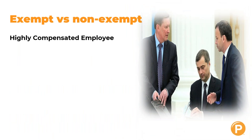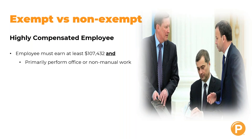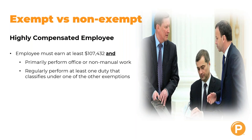The highly compensated employee classification requires earning at least $107,432 a year, performing primarily office or non-manual work, and regularly performing at least one duty that qualifies under another exemption category — such as executive or administrative. This category is often used when a highly compensated employee does not manage any employees, since remember, the executive exemption requires supervising at least two individuals.